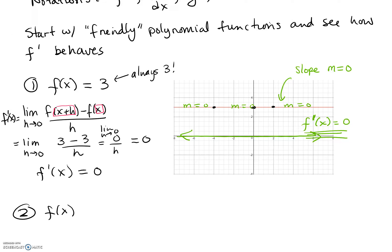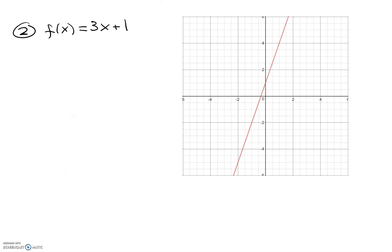Let's look at another line — not horizontal — say the function 3x plus 1. We know this is just a linear function, and the slope of this function is of course 3. No matter where I am, whether I'm at 1 or at negative 2, the slope of this line is always 3. No matter what x value I'm looking at, it never changes because it's a straight line. So we would expect f prime of x to be just 3, because the slope of the tangent line across this entire line is always going to be 3.